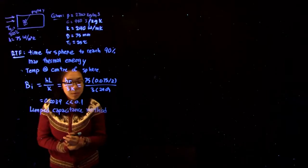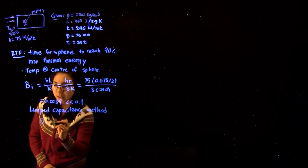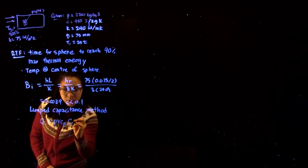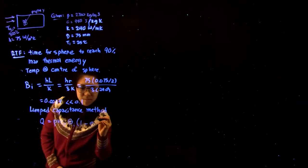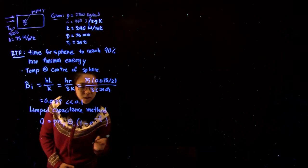Now we want to do our energy balance, which says that for the lumped capacitance method, Q over rho V Cp theta_i is equal to 1 minus e to the minus T over tau.